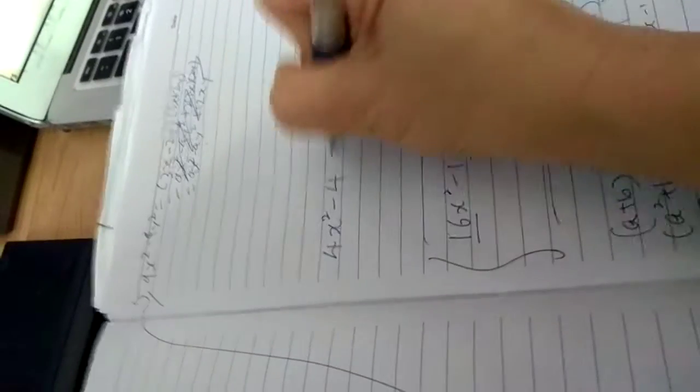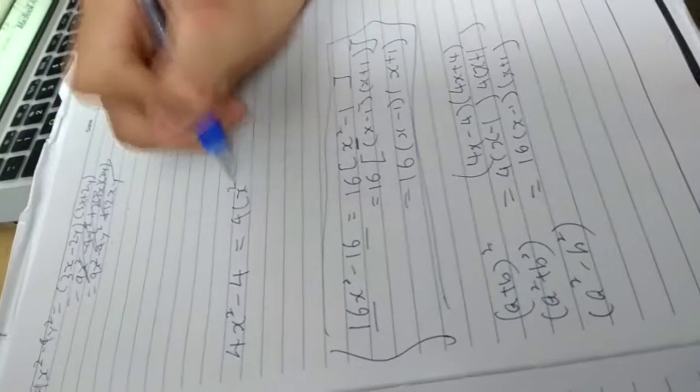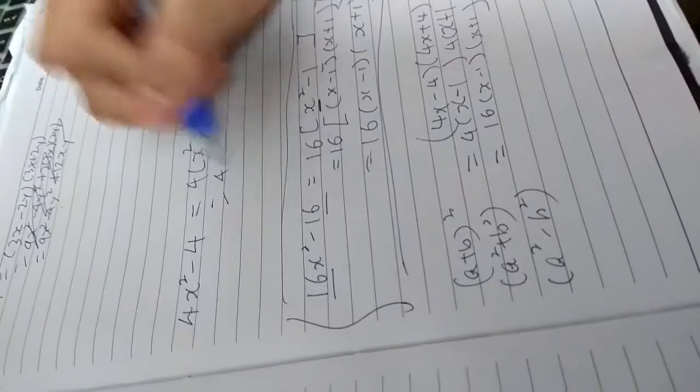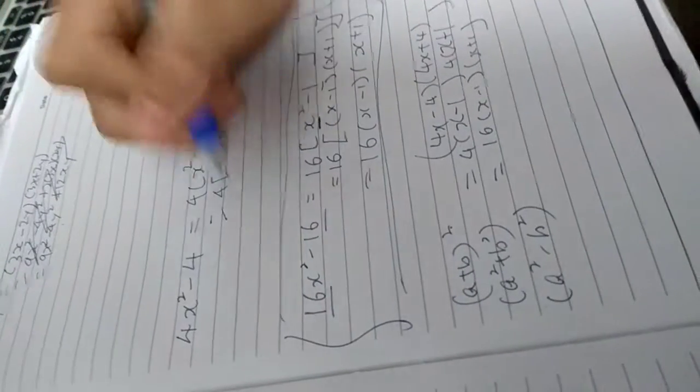What's the first thing you should do? Take out 4 first. Yes, so 4 times x minus 1. Yes, very good. So then it's 4 and it's a perfect square, x minus 1 times x plus 1. Yes.